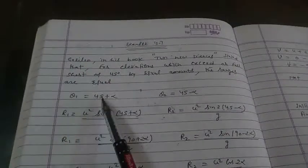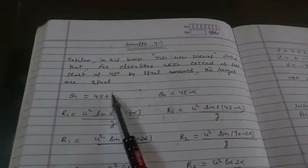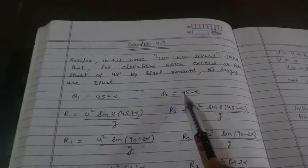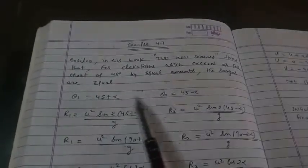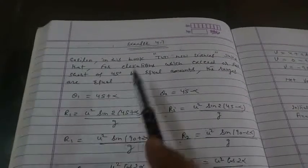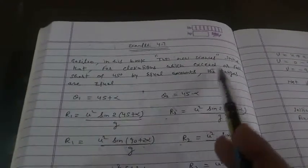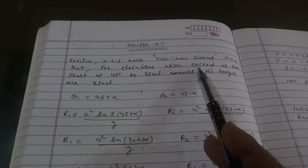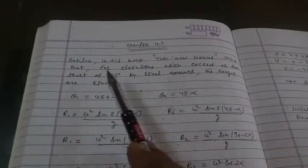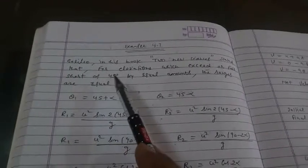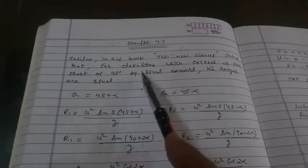Meaning if the angle is greater than or less than 45 degrees, if the projectiles are thrown, the range is equal. Exceed means 45 plus alpha, and fall short means 45 minus alpha.